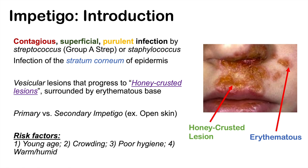Risk factors of Impetigo often include a young age, so you're generally going to see this condition in children and young adults. A second risk factor is crowding — because it's a contagious condition, you're going to see this more in people in larger families in smaller homes. It's also associated with poor hygiene and warm or humid conditions, which increase the likelihood of an Impetigo infection.